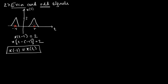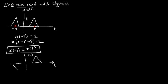Now consider the second type: odd signals. For that, let us draw one more diagram where the x-axis represents t and the y-axis represents our signal x of t. In this diagram, this position is t, this is minus t, and the signal has an amplitude of 2 here and minus 2 there.